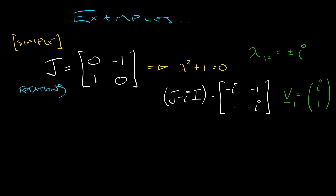Because everything comes in complex conjugate pairs, I know immediately, without doing any additional work, that the second eigenvector can be chosen to be the complex conjugate of the first — that is (-i, 1). That's nice and simple.